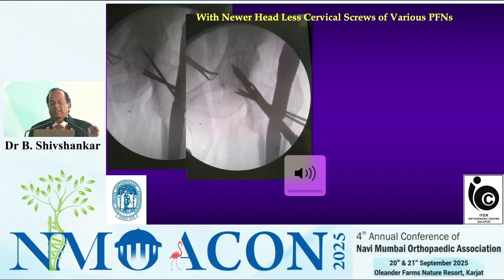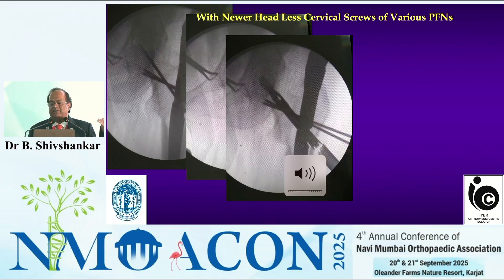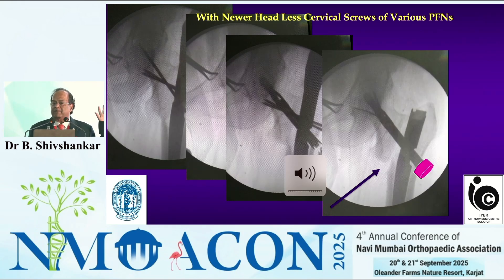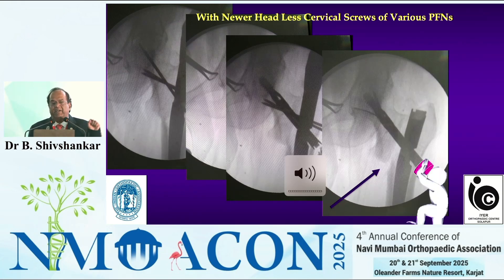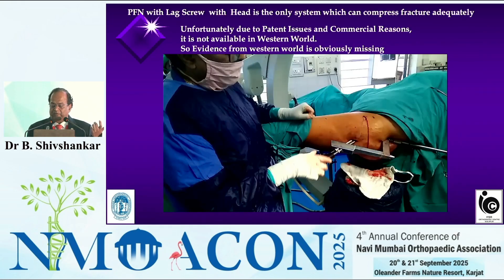Friends, there are many newer implants which have no head for the neck screw. When there is no head for the neck screw, the lateral portion — though you compress on table — they come out because there is no counter action. The well-compressed fracture opens up as soon as you remove the jig. If there were something against that, like a head on the screw, that would have prevented the bone from coming out.